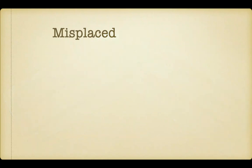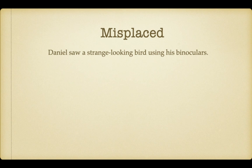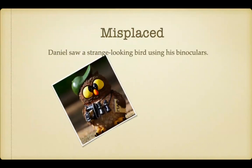A misplaced modifier is too far away from what it modifies. This makes the sentence potentially confusing to your audience. Here's an example: 'Daniel saw a strange-looking bird using his new binoculars.' Honestly, I think most sentences with misplaced modifiers are rather entertaining — they tend to put the most unique pictures in one's mind. However, they are incorrect, so they must be addressed.